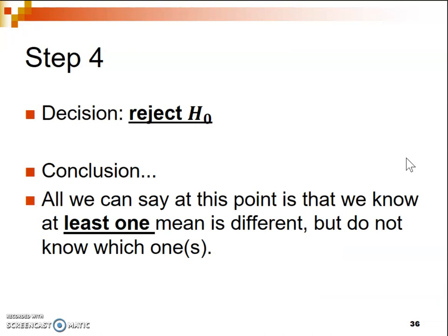Our decision is to reject the null hypothesis. Our conclusion is a bit more complex — our null hypothesis indicated that all groups were equal, and the alternative hypothesis stated that at least one is different. So at this point, all we can say is that at least one of these means is different, but we cannot say which one. We'll need to take an additional step to figure out exactly how these groups differ from each other.